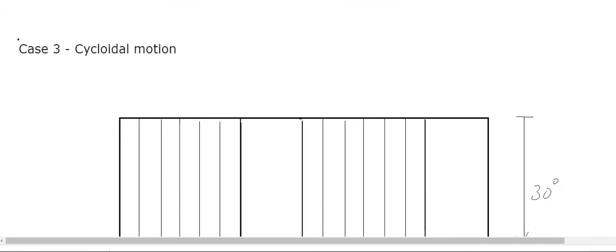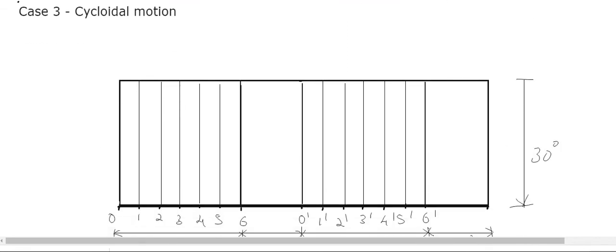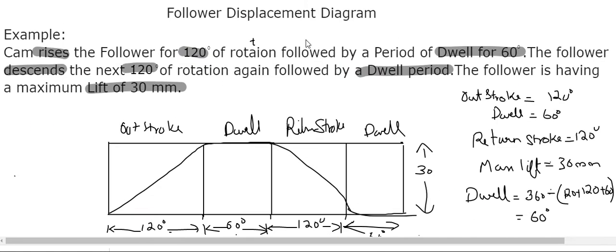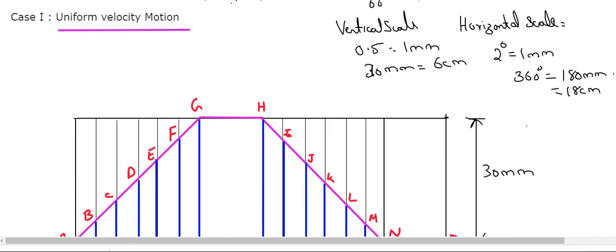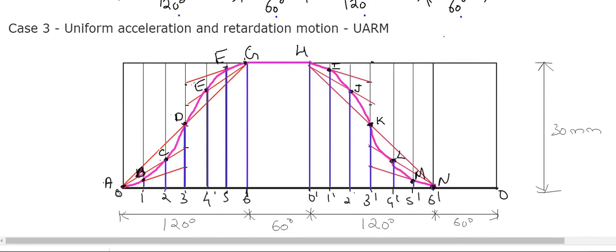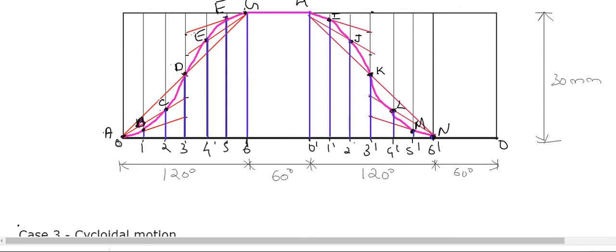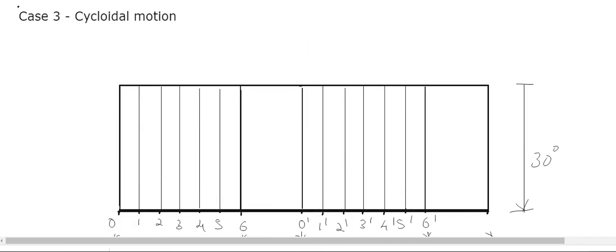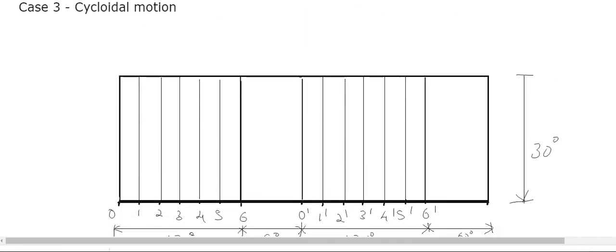Continuing with the follower diagram of cam, we have seen how to draw the follower diagram for uniform velocity motion, simple harmonic motion, and uniform acceleration retardation motion. Now we will see how to draw it for cycloidal motion, which is the last one we need to study.